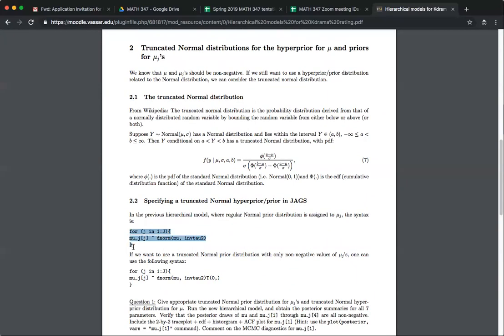So quickly, this is what we had done before, right? Those three lines that I'm highlighting. This is just giving the regular normal prior for the mu. So it's dnorm and then you have a mu_j, and you get a dnorm mu and the inverse tau square.